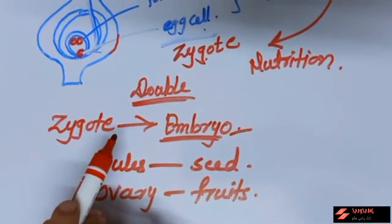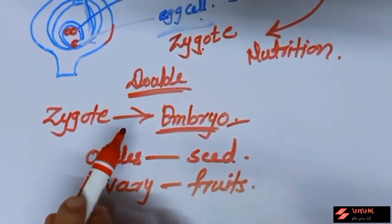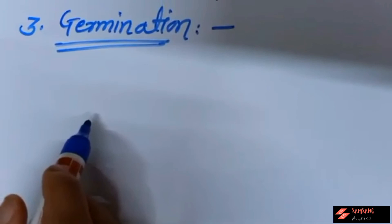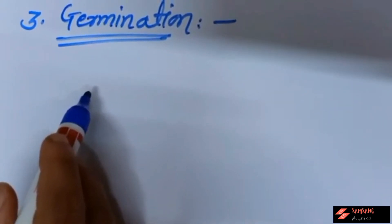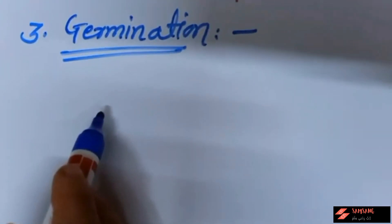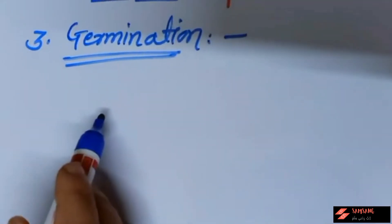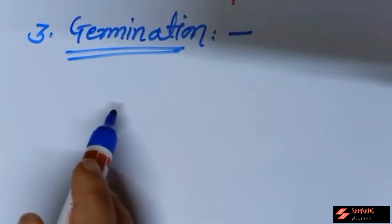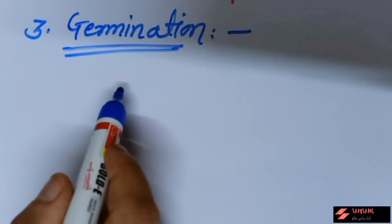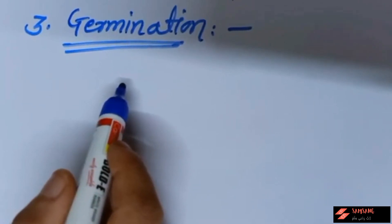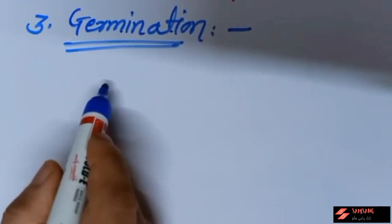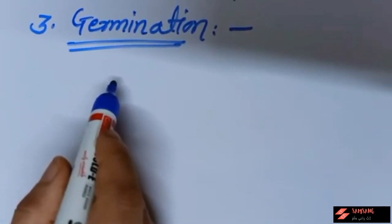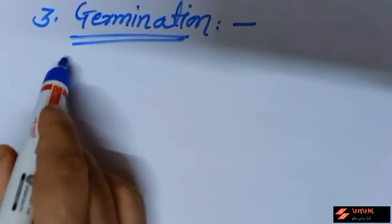The last process in sexual reproduction of plants is germination. After formation of seeds from the ovule and fruit from the ovary, when the seed gets suitable conditions, the future plant inside the seed develops into a seedling under appropriate conditions. In this way, small plantlets or seedlings are formed from the seed after fertilization and germination, and new plants are produced.